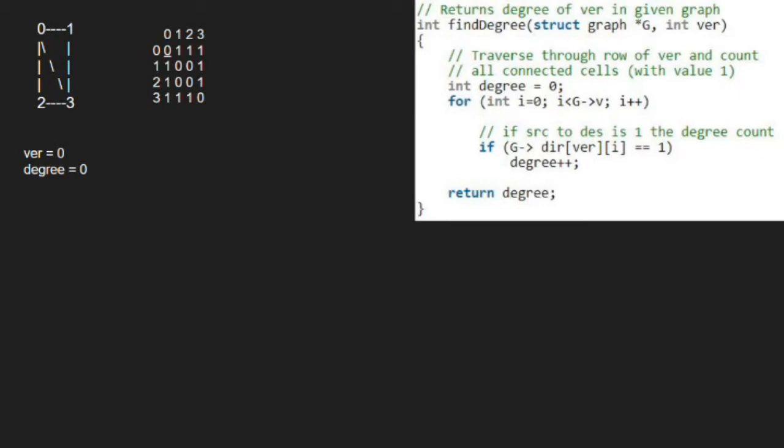So, now i will be 1. We check if dir at row 0 and column i is 1. As it is 1, the if condition gets satisfied and we increment degree. So, now degree will be 2.